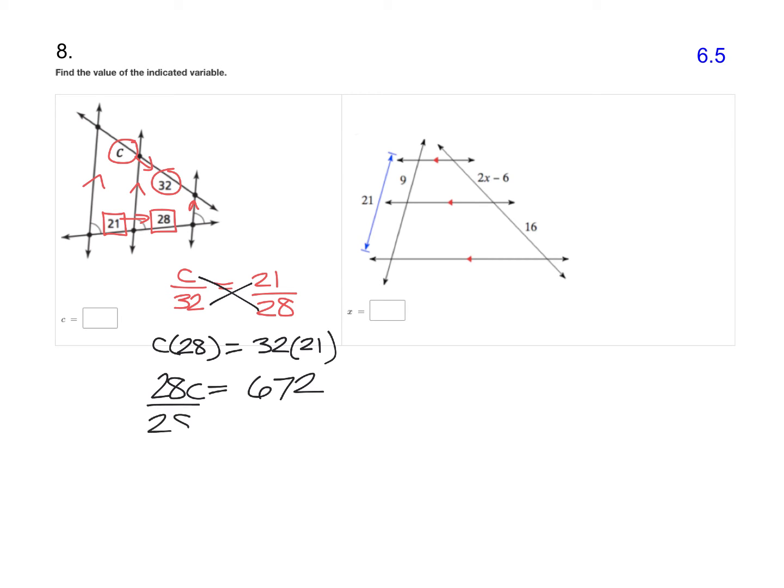Then just divide each side by 28. And when you divide that out, you'll end up with C equals 24. So my missing side here is 24.